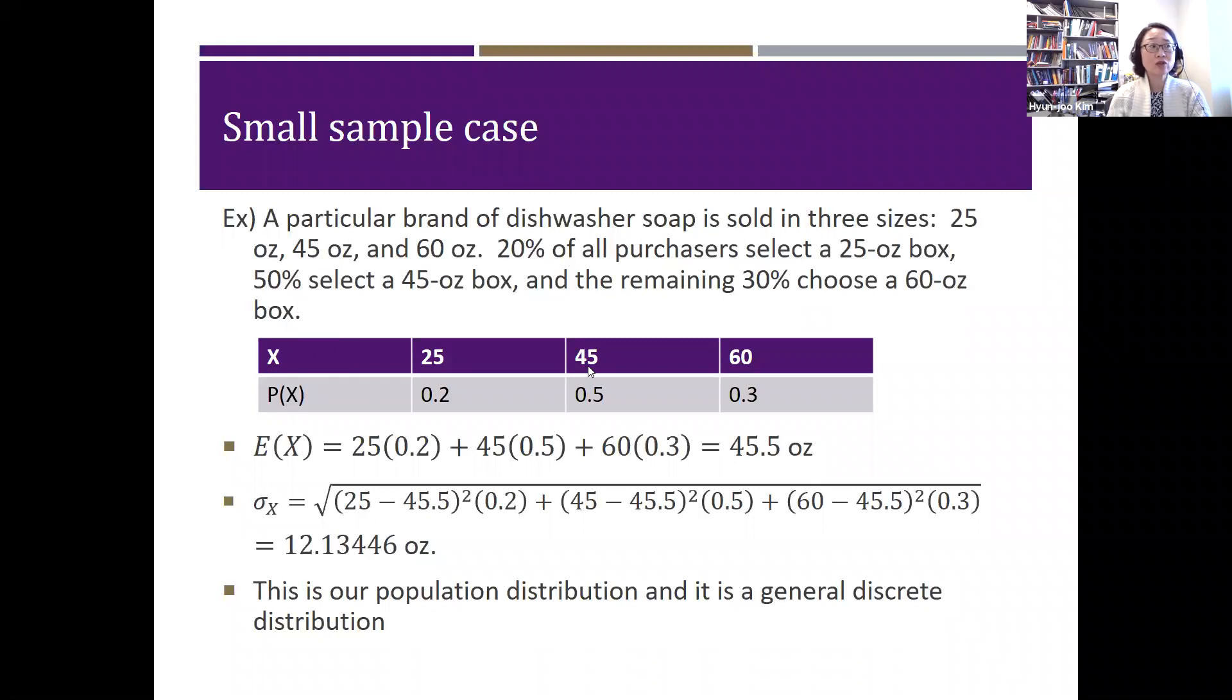Notice that they actually don't sell the 45.5 ounce dishwasher, right? But it's just average of all the dishwasher soap that is sold. So it's not really the exact value that you can actually get from the store. Standard deviation of X, again, there's a formula that you learned: summation of X minus mu squared times probability of X. So if you plug all those values there, you're going to be able to get sigma of X, standard deviation of X, 12.13446 ounce. This is our population distribution, and this is discrete case.